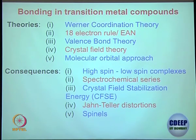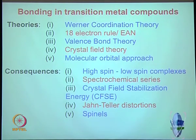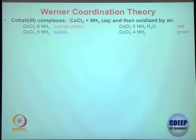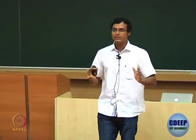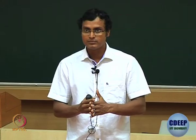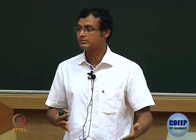I will start with Werner coordination theory. I would like to take you more than 100, 120 to 130 years back to what chemists were thinking at that time. Right now we see well-written books because a lot of studies have been done over the last 100 to 150 years. If you look back, there was almost very little understanding 150 years ago, and from that perspective you may not appreciate the importance of Werner's contribution. You have to really look back at least 150 years or so.